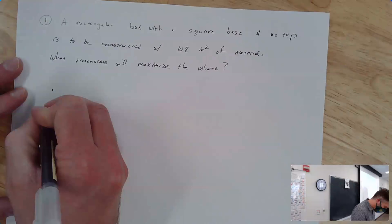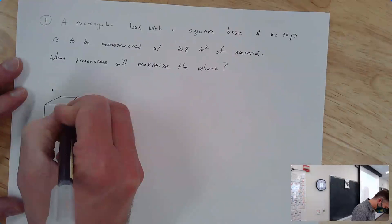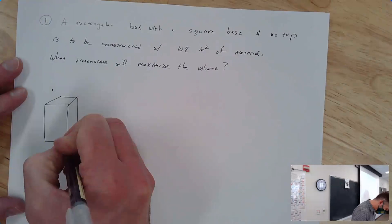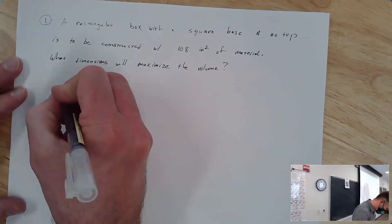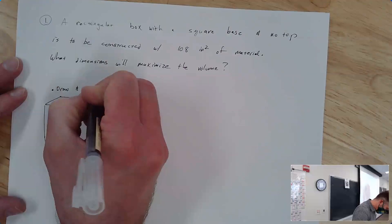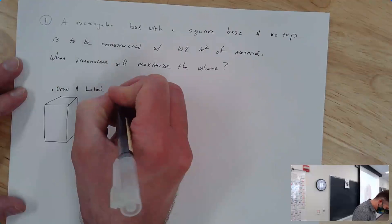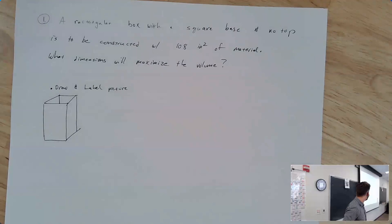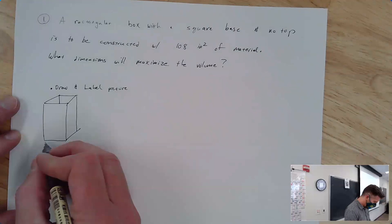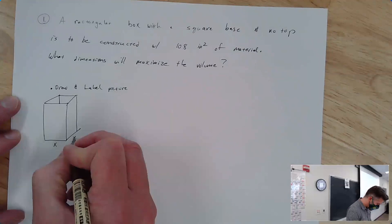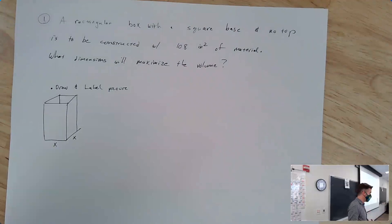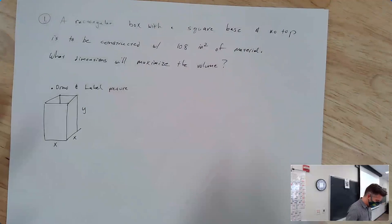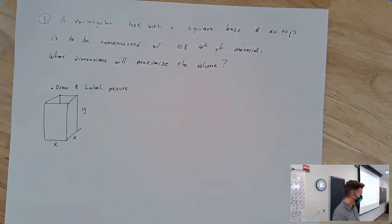So here's my box with a square base. I just want to label it, and it's got an open top. I'm going to call the base size x, and they're each x because it's a square base. I don't want to use extra variables. And let's call the height y. So there's my box.